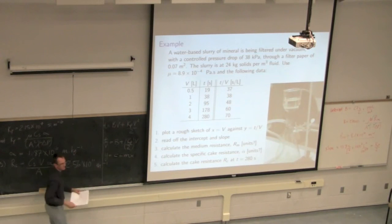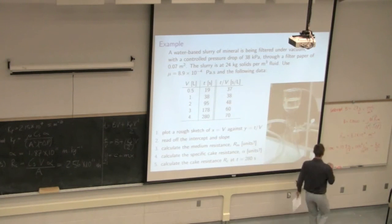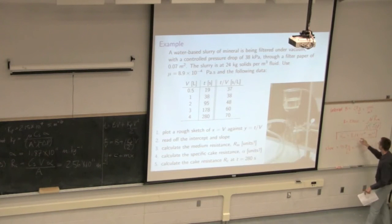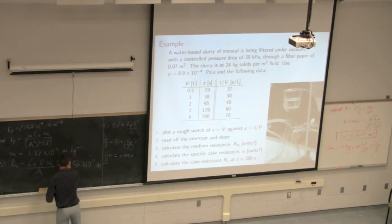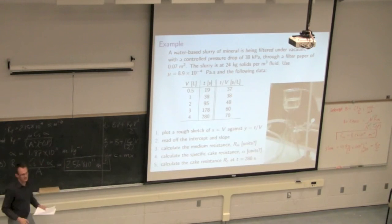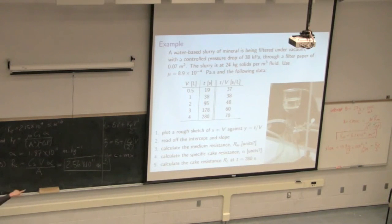The final step is to calculate the cake resistance RC. RC equals CS times V times alpha divided by A. Because V increases with time, RC is also always increasing — CS, A, and alpha are constant under constant pressure filtration. The worst-case RC is at the end of the filtration at 280 seconds, giving RC equal to 2.56 times 10^11 m^-1. Quick comparison: RM is 8 times 10^10, and RC is 2.56 times 10^11. They are actually comparable in this small batch experiment — RM is about one third of RC, so it's not small enough to ignore here. In future examples as the batch progresses, RC will become much larger than RM.